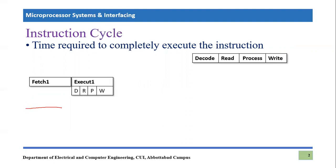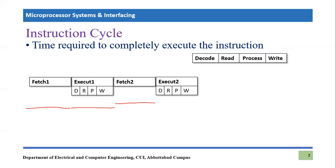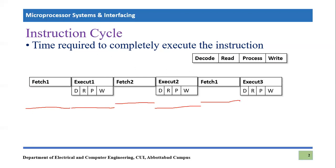One instruction cycle is consumed in fetch one and another in execution one. Then we have to fetch the next instruction — that is fetch two — which consumes another cycle. Then we execute the second instruction performing all four processes, consuming another cycle. Then we fetch the third instruction consuming another unit of time, and execute it repeating the same procedure.